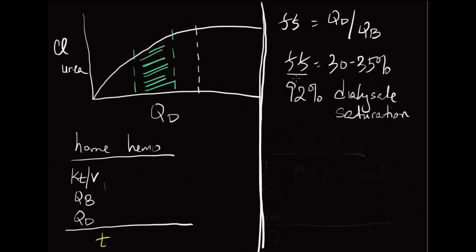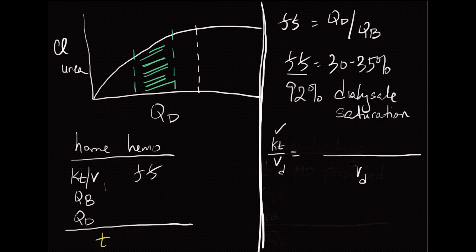Let's look at a typical home hemo prescription. We tell the machine the KT/V we want. We solve for this equation: KT/V equals the clearance times time divided by the volume of distribution. The volume of distribution stays the same — derived from the patient's body weight. The clearance is the ratio of urea in the dialysate versus the plasma, times the drain volume, times time.